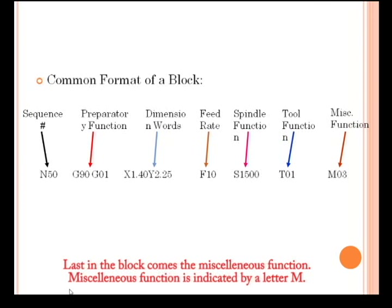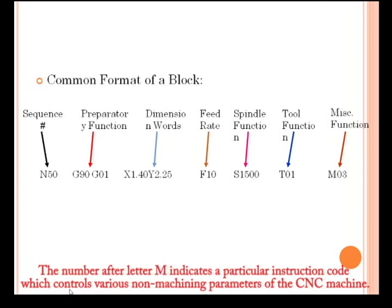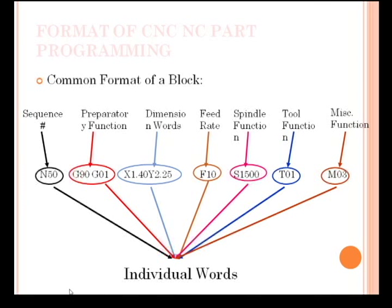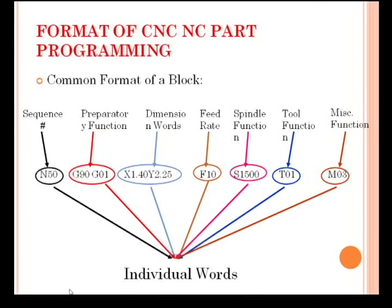Last in the block comes the miscellaneous functions, indicated by letter M. The number after letter M indicates a particular instruction code which controls the various non-machining parameters of a CNC machine. All these words are individual and not linked with each other. These words can be used anywhere in the block.